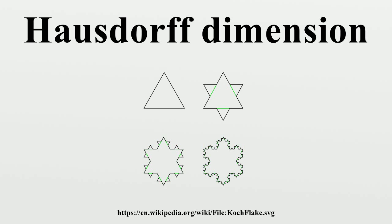He observed that the proper idealization of most rough shapes you see around you is not in terms of smooth idealized shapes, but in terms of fractal idealized shapes. Clouds are not spheres, mountains are not cones, coastlines are not circles, and bark is not smooth, nor does lightning travel in a straight line.